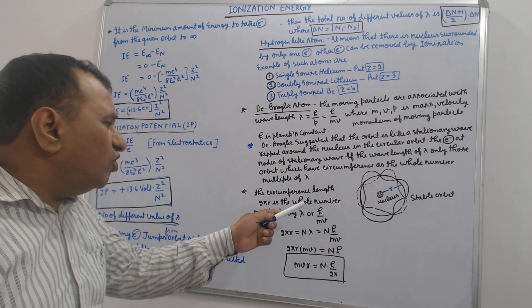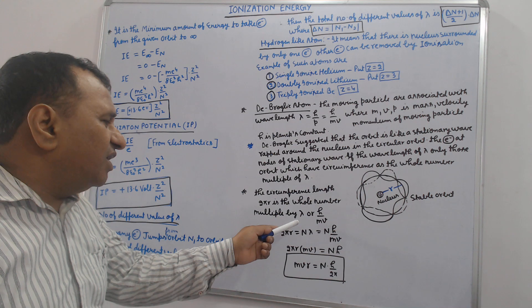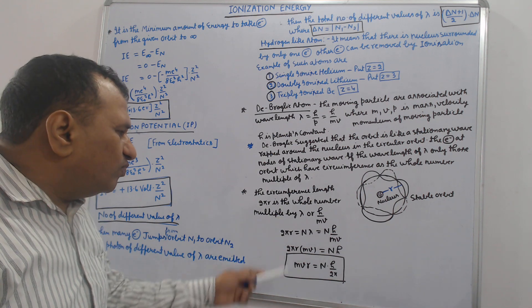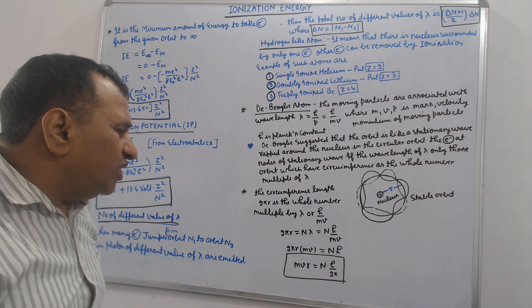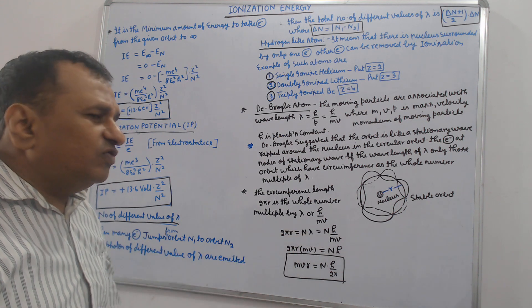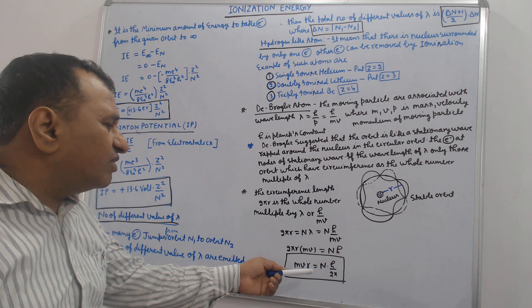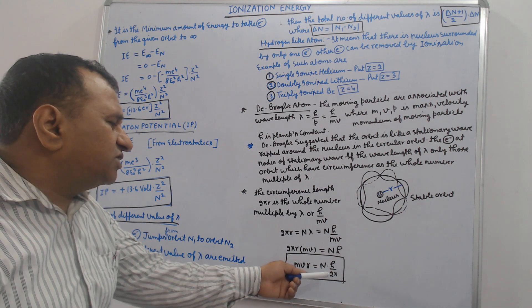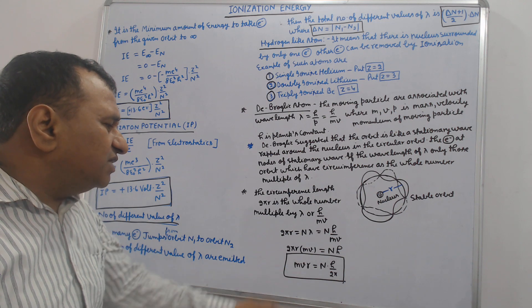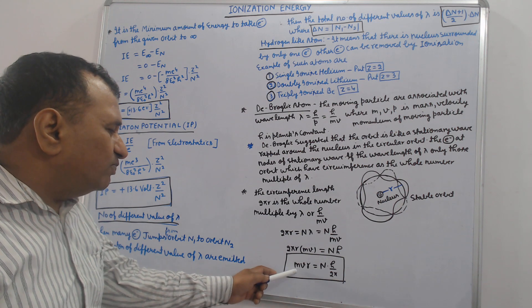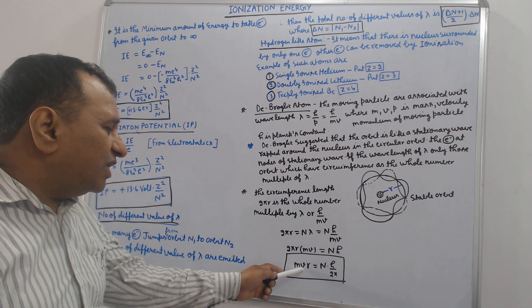2πR is the whole number multiple by lambda or h by mv. 2πR equals nλ equals nh by mv. Therefore, mvR equals nh by 2π. h is Planck's constant, n is number of orbit, m is mass of electron, v is velocity of electron, R is radius from nucleus.